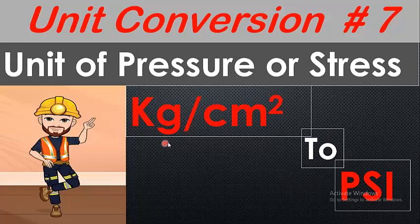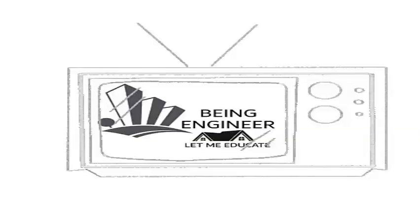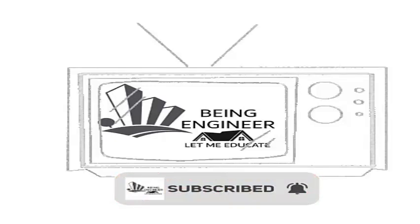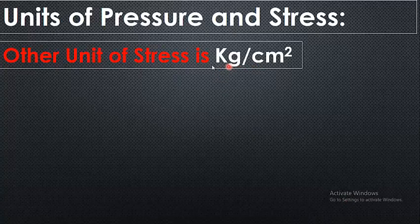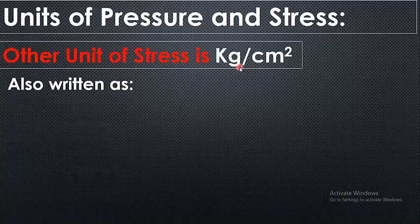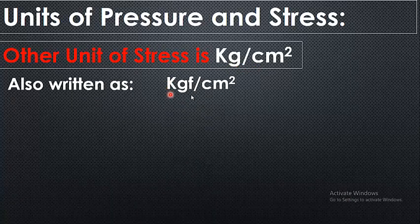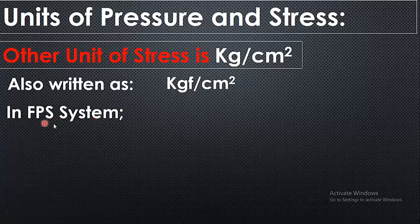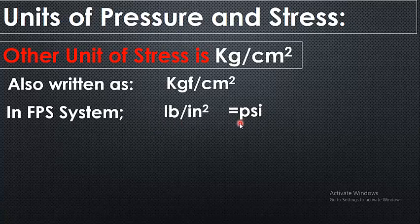We will see how one kg per centimeter square is equal to how much psi. The unit of stress kg per centimeter square is also written as kgf per centimeter square. In the FPS system, that is the foot-pound-second system, the unit of stress is lb per square inch, that is pound per square inch, or it can also be written as psi.